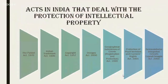Different sectors of intellectual creation are protected by different acts. Technical inventions are protected as patents under the Patent Act 1970. Trademarks are covered under the Trademark Act 1999, copyrights under the Copyright Act 1957, designs under the Design Act 2000, geographical indications under the Geographical Indications of Goods Act 1999, protection for plant varieties and farmers' rights under the Act of 2001, and Semiconductor Integrated Circuits Layout Designs under the Semiconductor Integrated Circuit Layout Designs Act 2000.